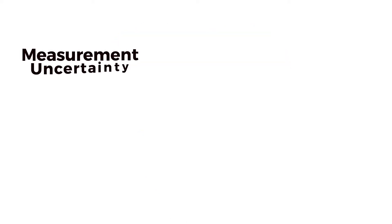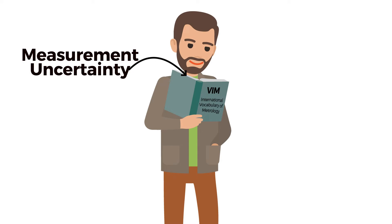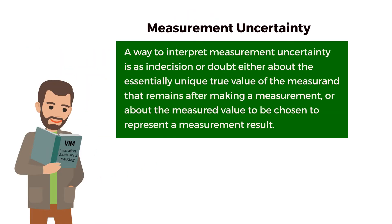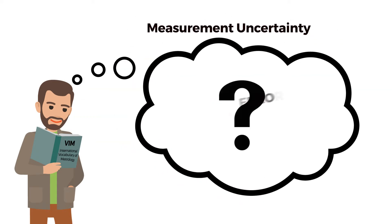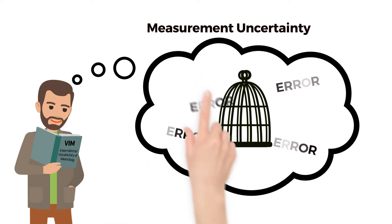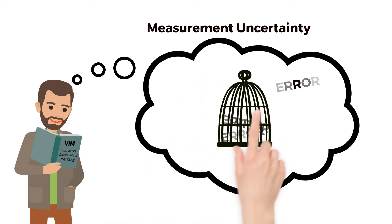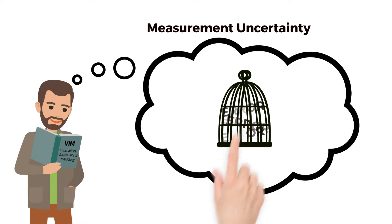Measurement uncertainty, which includes precision, is explained in the international vocabulary of metrology. A way to interpret measurement uncertainty is a doubt about the measurement result. Since we do not make perfect measurements, we must consider the error sources. When all the errors are captured properly, we can describe how well we made the measurement, or what our measurement uncertainty is.